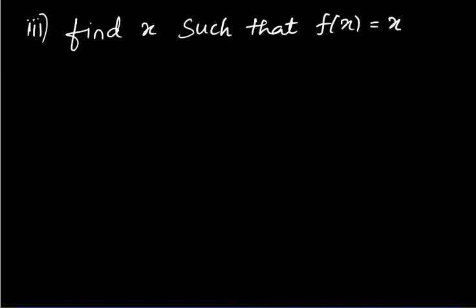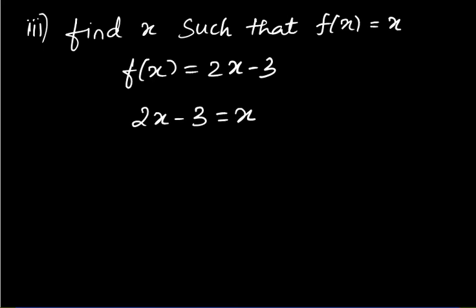Third part of Q6: find x such that f(x) = x. So 2x − 3 = x. Group the x-terms: 2x − x = 3. Therefore x = 3.